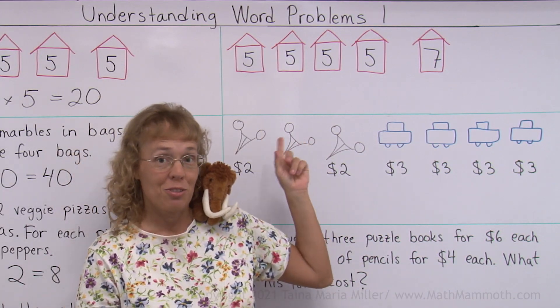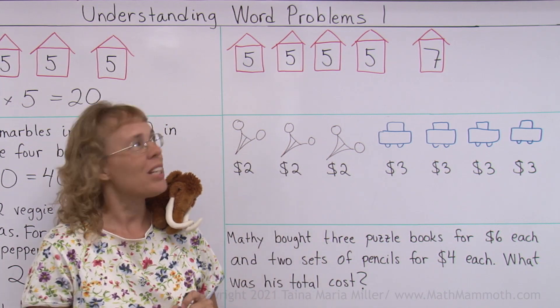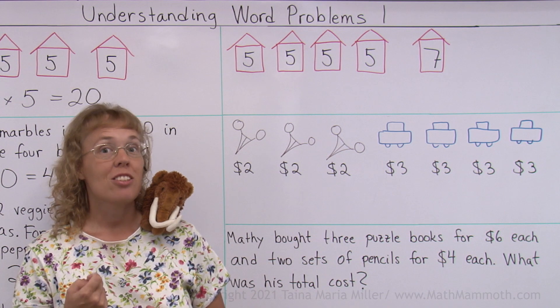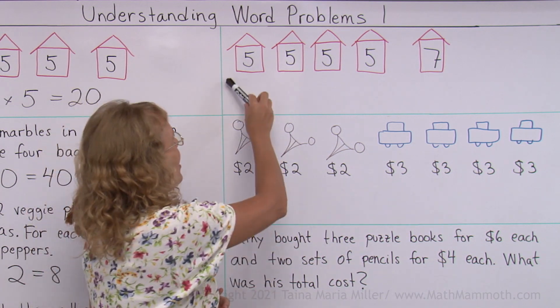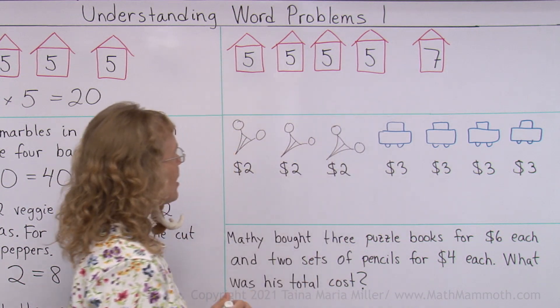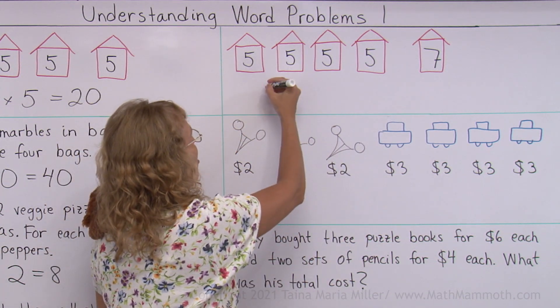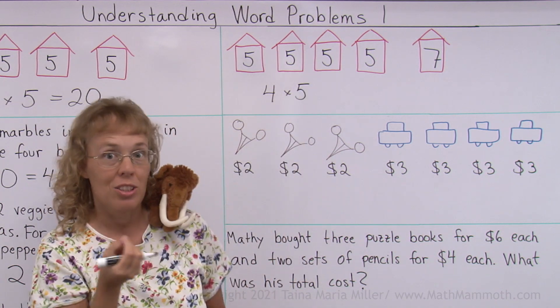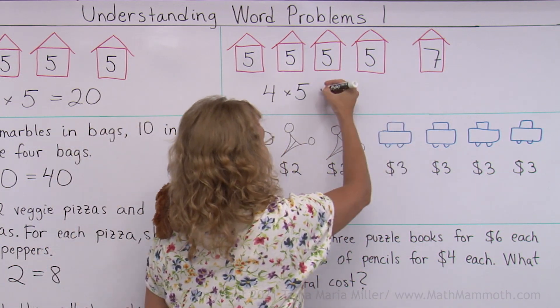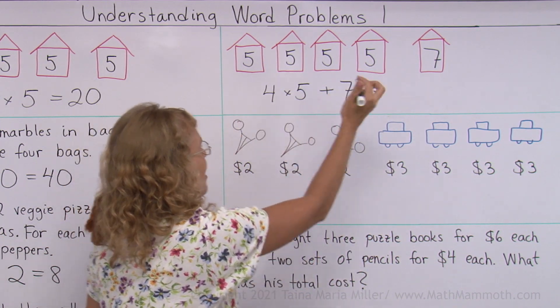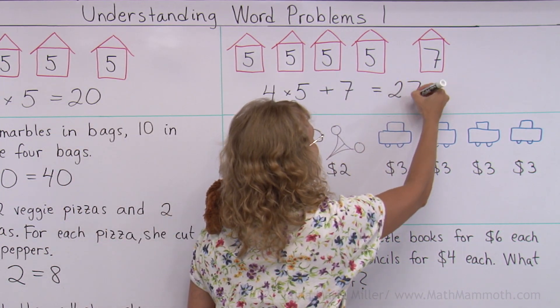Over here, to find the total number of people in these houses, we need to use both multiplication and addition. For these houses here, we can use multiplication, just like before. The people in those houses are 4 × 5 people. And then we need to add the people in this house. We add those seven people. And this is 20 and then seven. So we get 27 people in total.